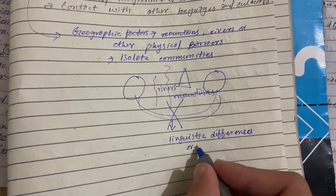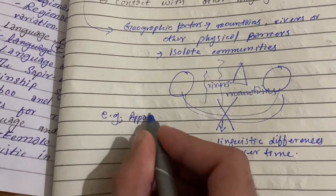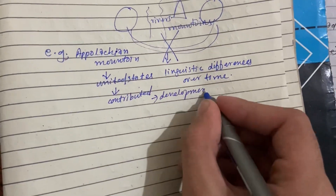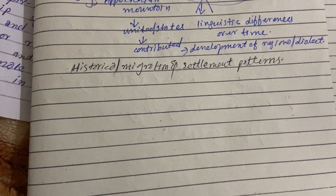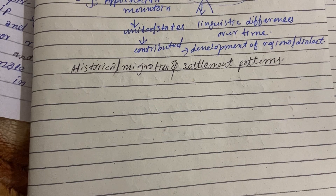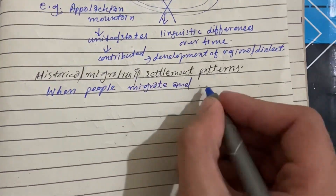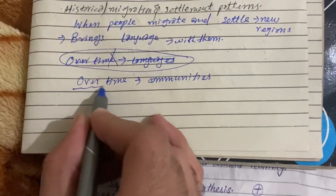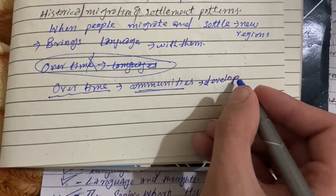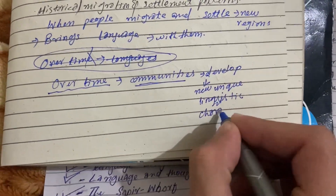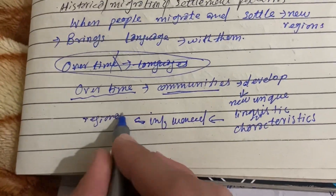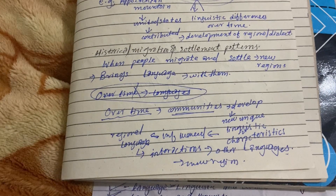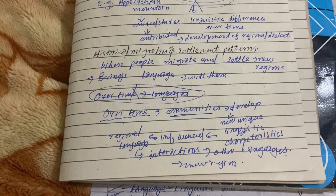We can take the example of the Appalachian Mountains in the United States, which have contributed to the development of distinct regional dialects. Another factor is historical migration and settlement patterns. When people migrate and settle in new regions, they bring their languages with them, and over time these communities may develop unique linguistic characteristics influenced by their original language and interactions with other languages in the new region, leading to regional variations or regional dialects.